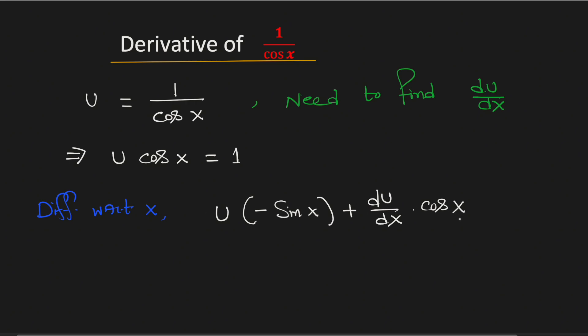This is the product rule of derivatives. And on the right hand side we will get 0 as the derivative of a constant is 0.